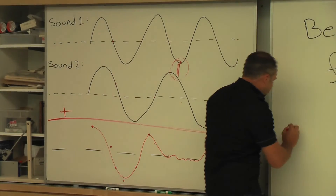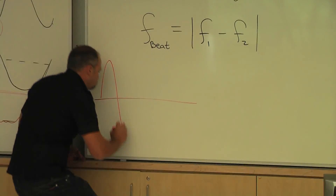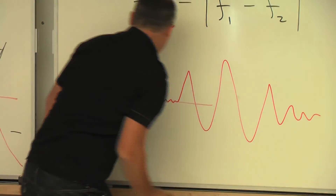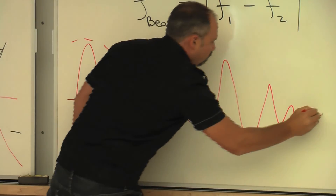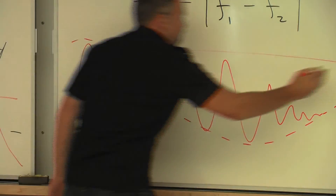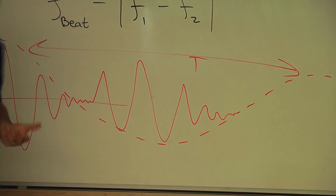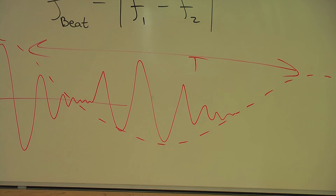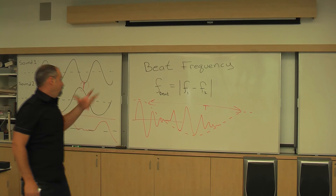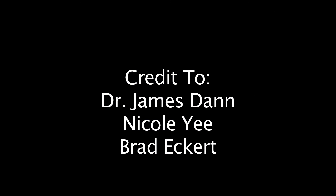More generally — and I refer you to the computer for more exact drawings — you'll get some pattern that goes like this. You can take a wave envelope, and then the frequency of this envelope gives you the beat period, and therefore the beat frequency. So that's basically what's going on. You've got the demonstration, and this formula is very simple and tells you what the beat frequency ought to be.